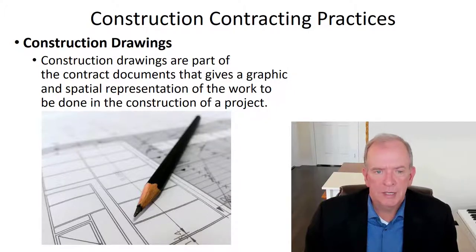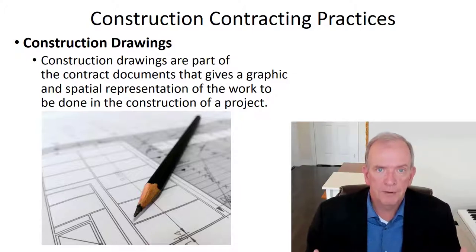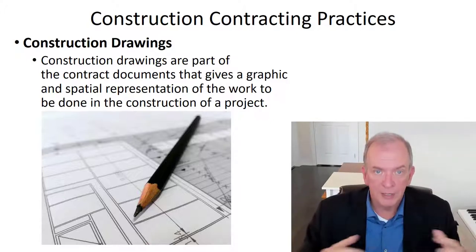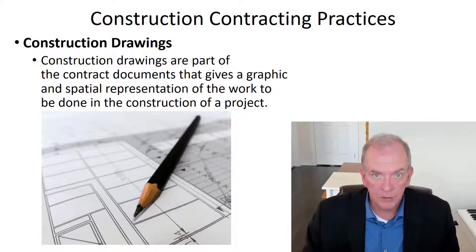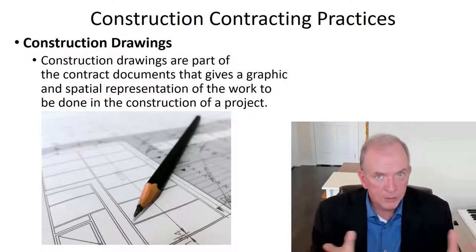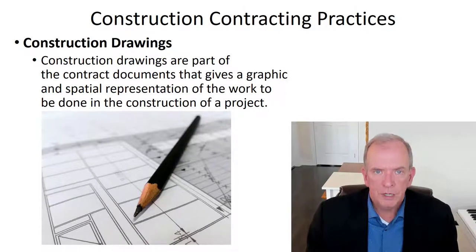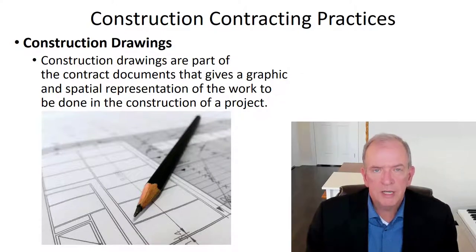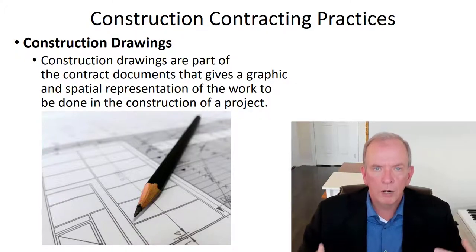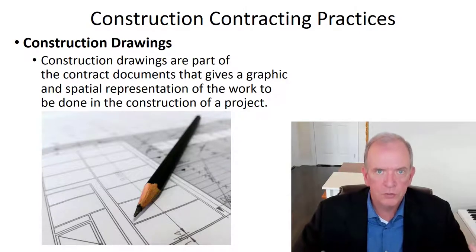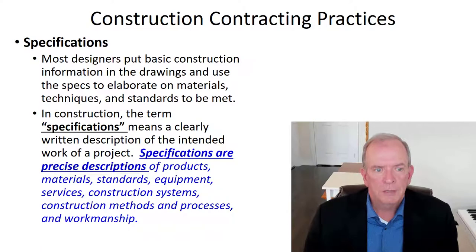The site plan gives you a good spatial understanding of the project. It's taken from the property or lot survey — the legal titled survey — so it shows the dimensions of the lot and where the building is going to be located, including setback requirements and height requirements. All of this has to coordinate with the permit office and regulatory authorities so you can get the proper approvals to construct the building.